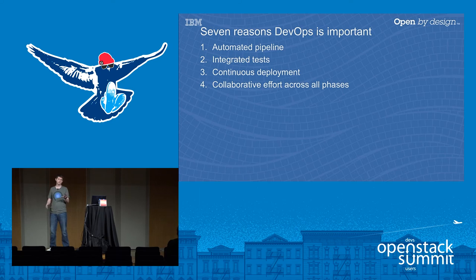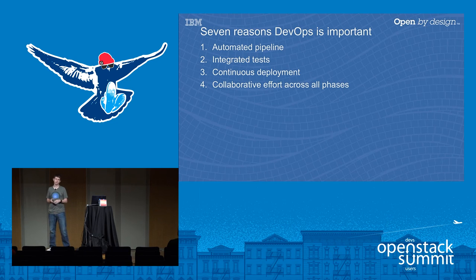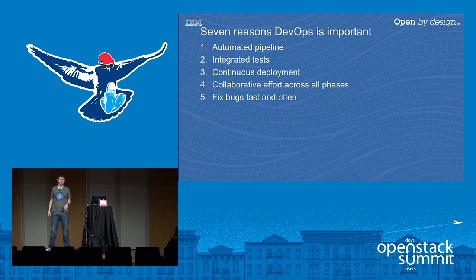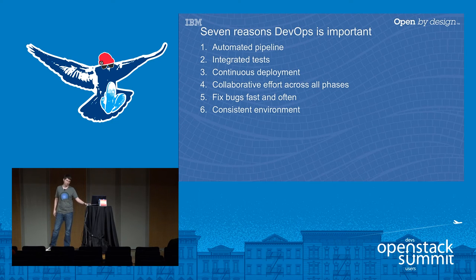Next we have a collaborative effort across all phases — instead of having development, test, debug, and then passing off to deploy, everyone's working on every aspect. Everyone wants to make sure it passes all the way to the end because everyone's involved in creating the tests, making sure it debugs correctly, and ensuring it deploys to the correct environments. Then fix bugs — you treat bugs kind of like features, because both involve changing the code and pushing it back into production through this continuous pipeline.